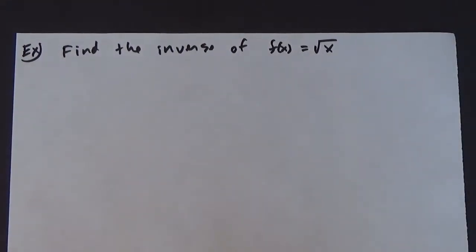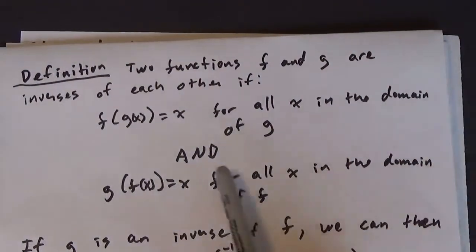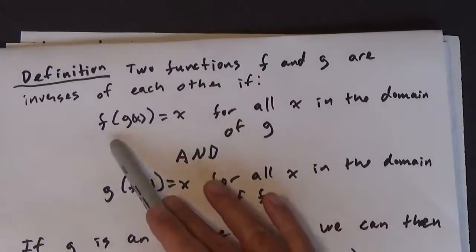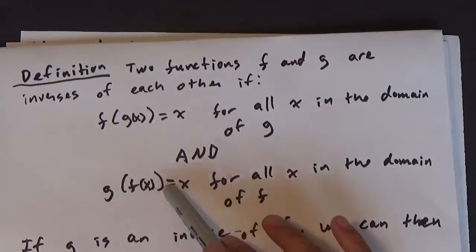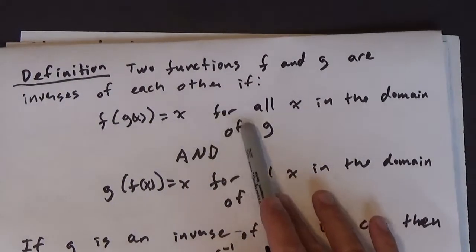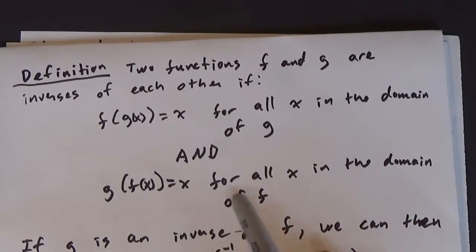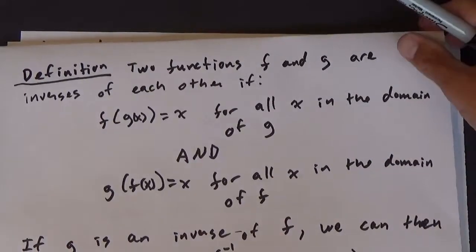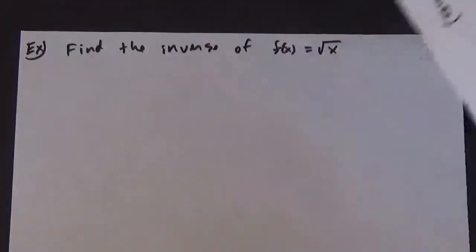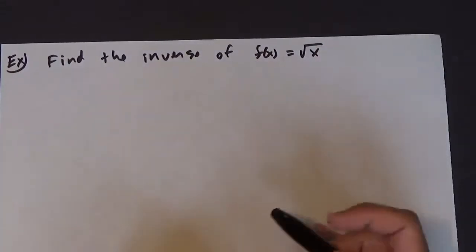In this video, we're going to discuss some domain issues that might come up when you're working with inverses. Back in our definition, we had this idea that you had to meet certain requirements in order for two functions to be inverses. There was this fairly vague statement about 'all x in the domain of g' and 'all x in the domain of f.' So let's look at an example of where domain issues might come up.